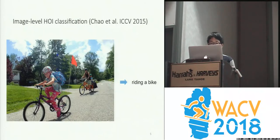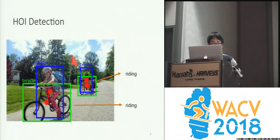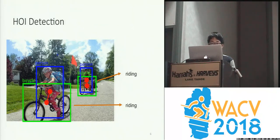However, an image can contain multiple people and multiple objects, and different people can be interacting with different objects. So in many scenarios, we not only want to know the interaction class label, but also which person is interacting with which object. So we study this problem we call the detection of human-object interactions, or HOI detection. Our goal is to detect pairs of bounding boxes, where each pair consists of one person and one object, together with an interaction class label.